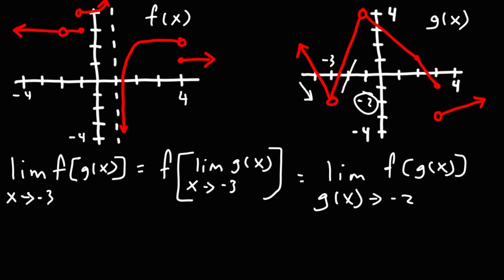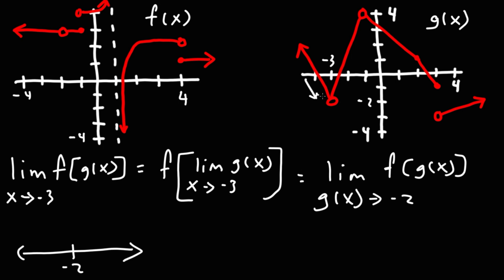You may want to take a minute to make sure you internalize that. You can visualize it with a number line. So here is negative 2, and we're focused on the y values. As we approach from this side, the y values are decreasing: 0, negative 1, negative 1.5, negative 1.9, negative 2. So they're greater than negative 2.